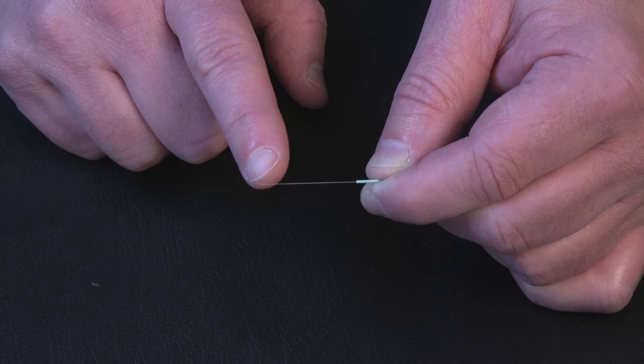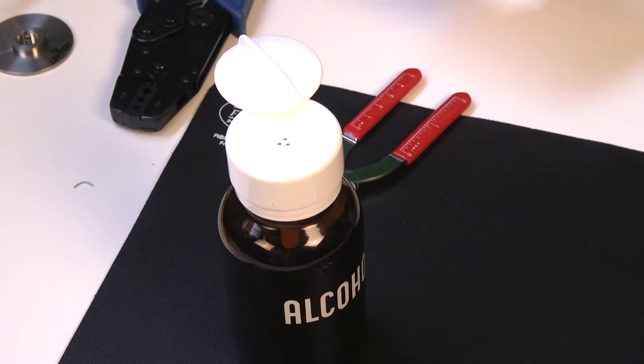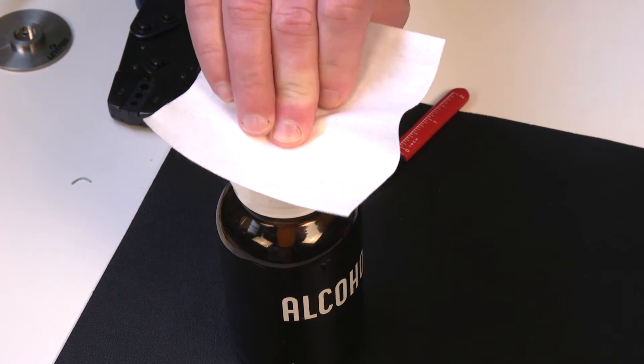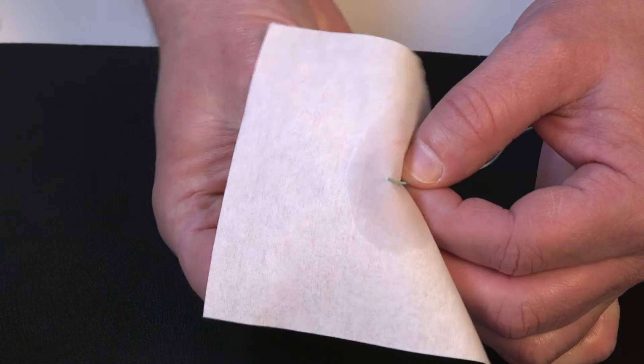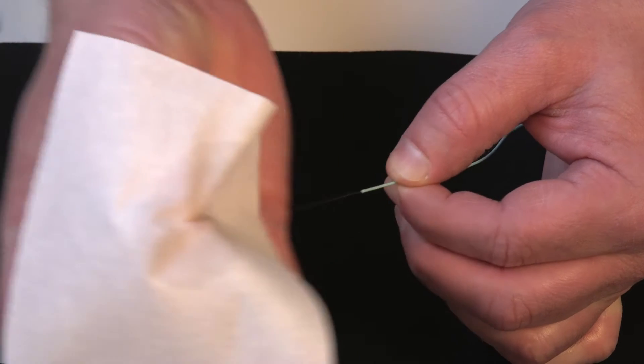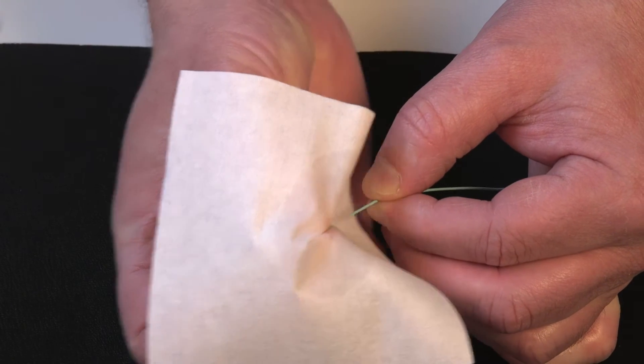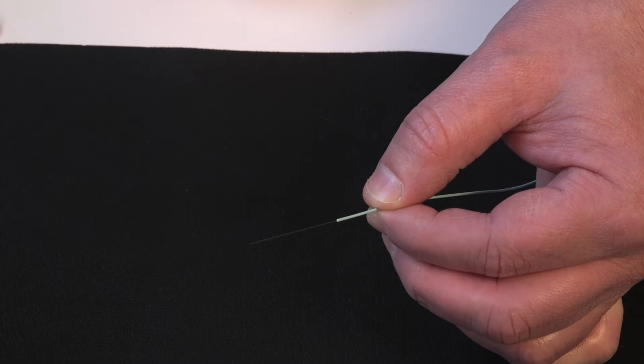Verify the acrylite coating has been removed from the fiber. Clean the bare fiber with an alcohol wipe to remove any debris. You will hear a squeak when cleaning. If no squeak is heard, recheck the fiber to ensure the acrylite coating has been removed.